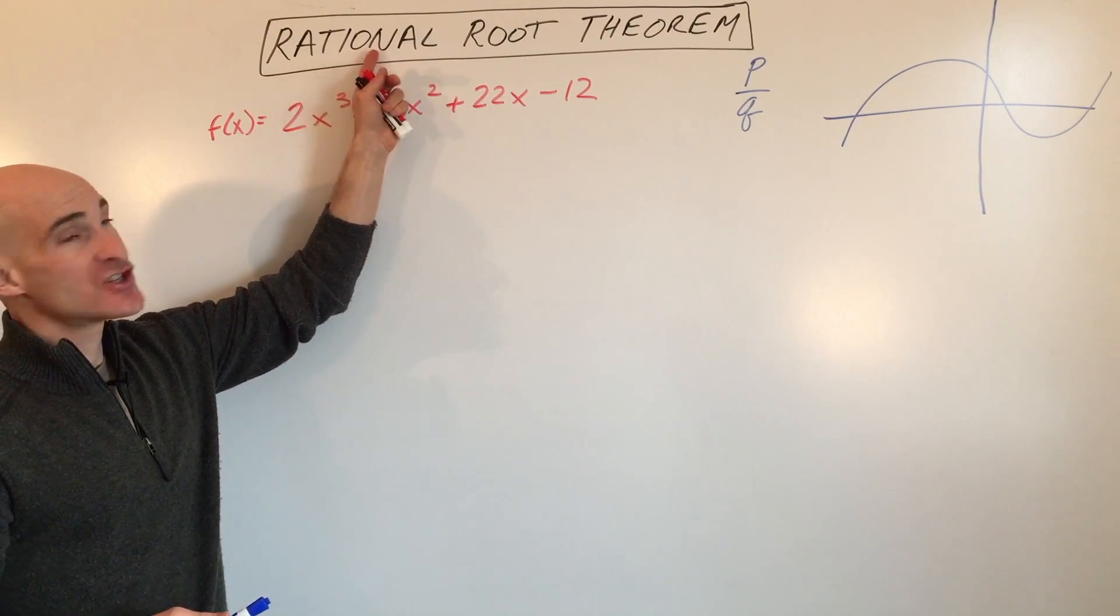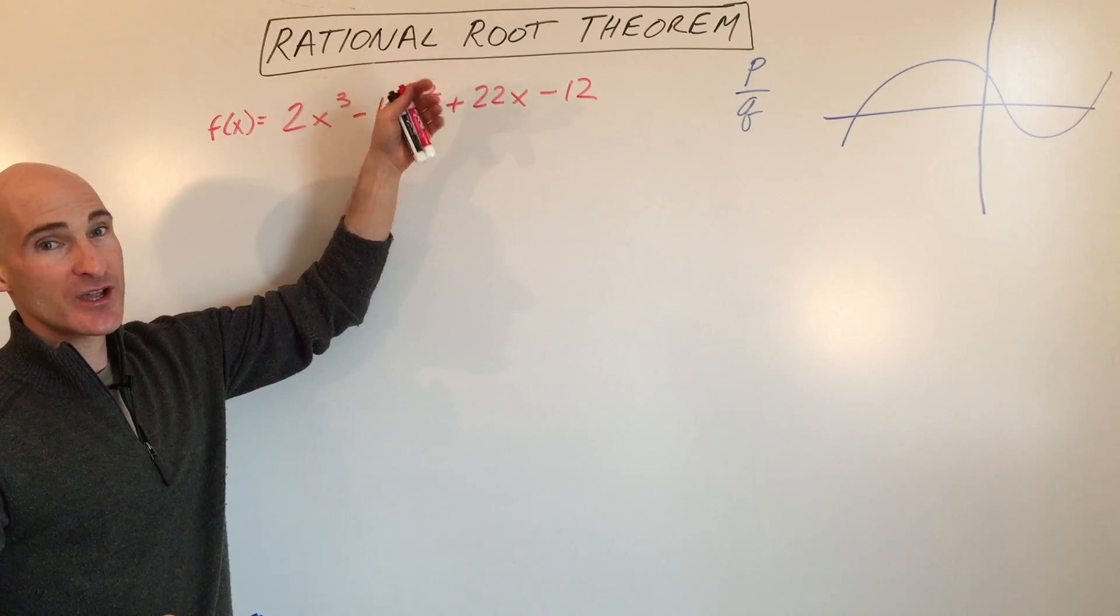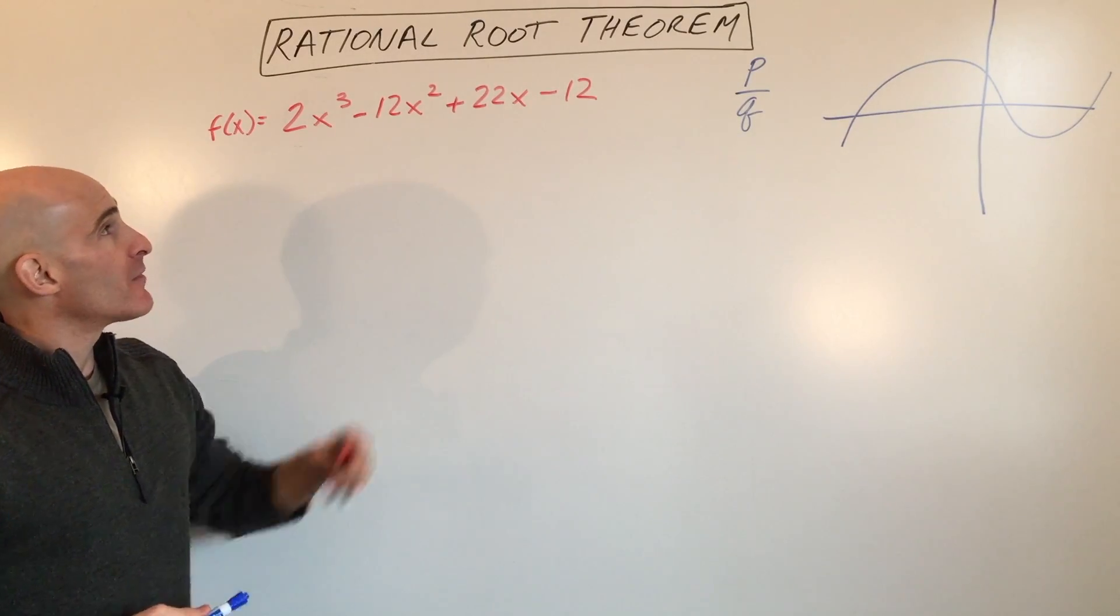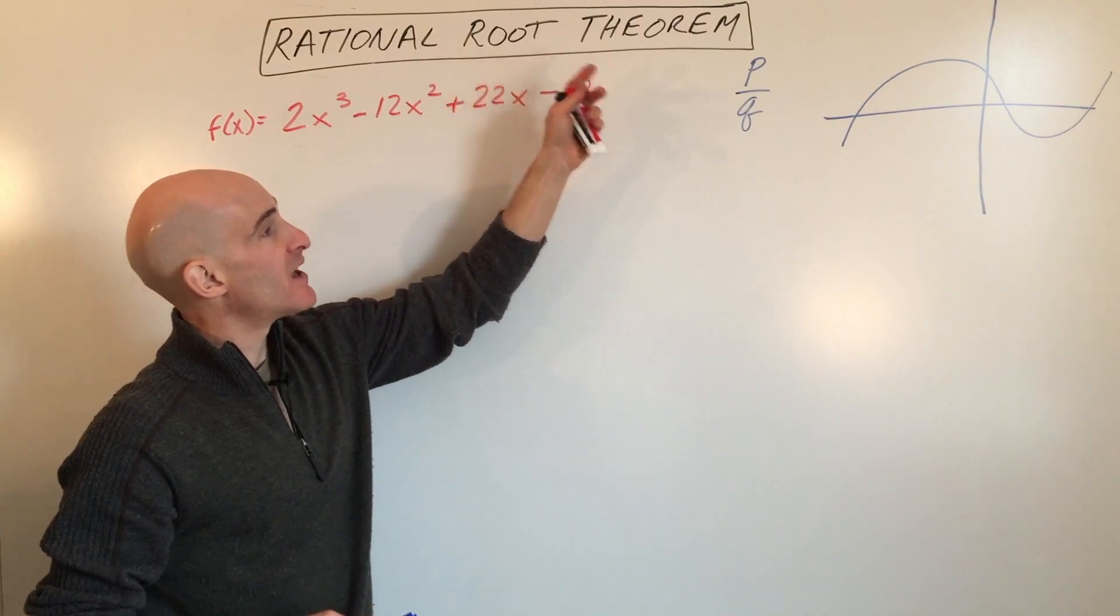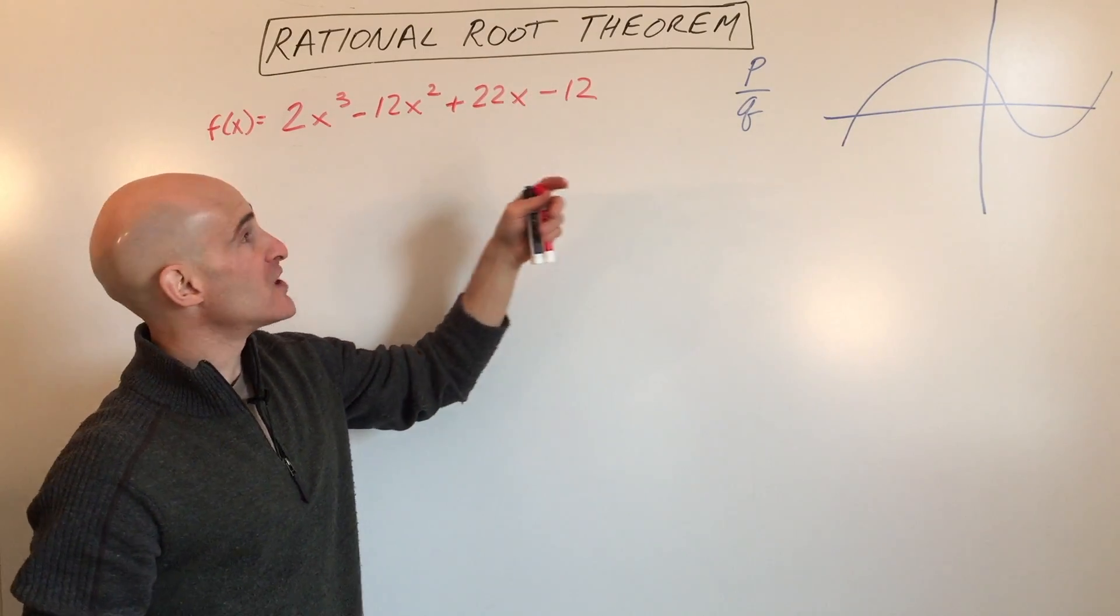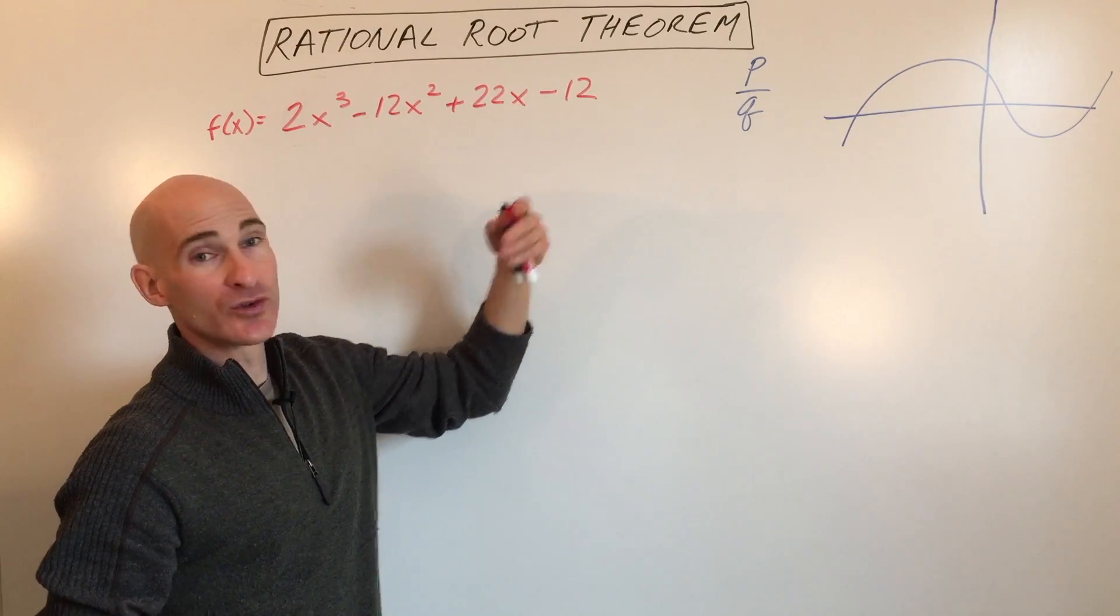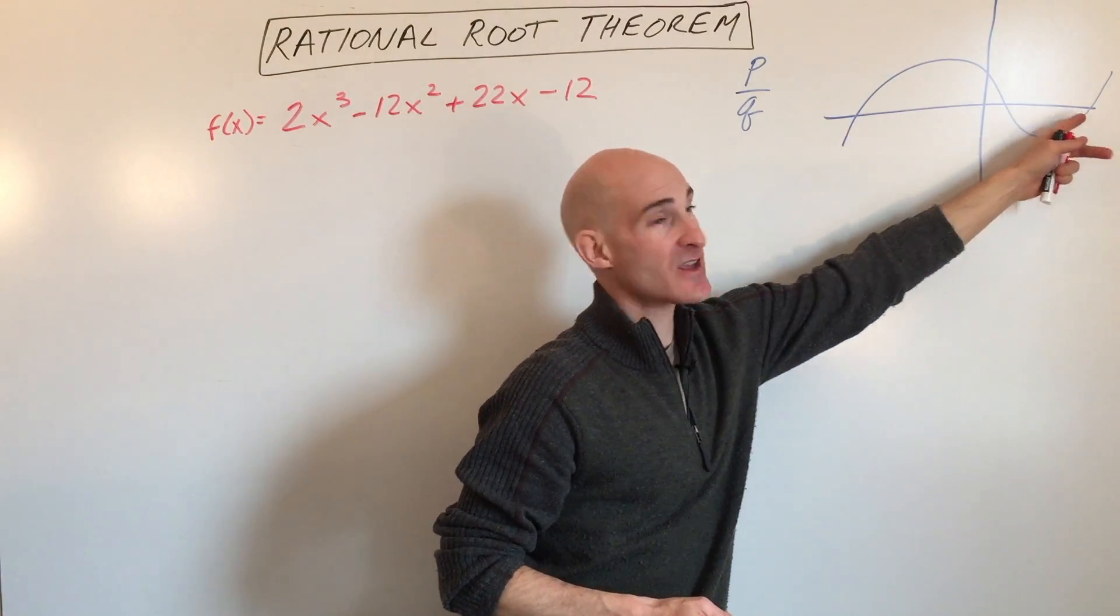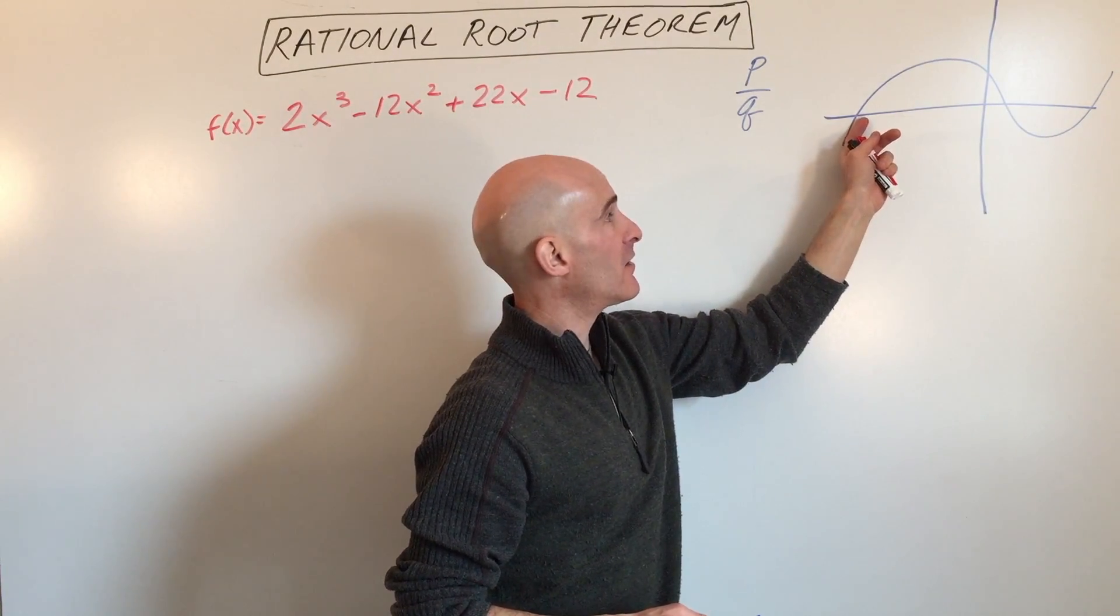When you see the word rational, that means ratio. When you think of a ratio, you think of comparing two quantities in a fractional form. And root means the solution of the equation, what makes the equation equal to zero. These are also the points where the graph crosses the x-axis.